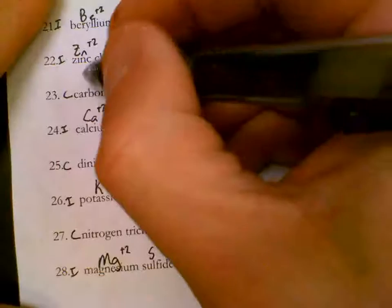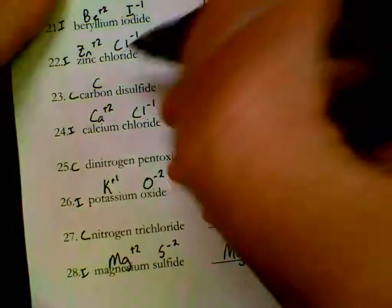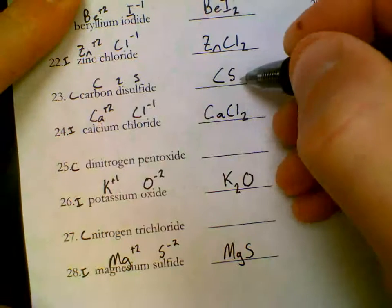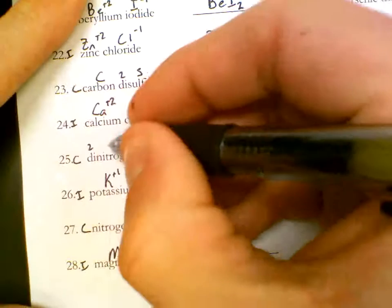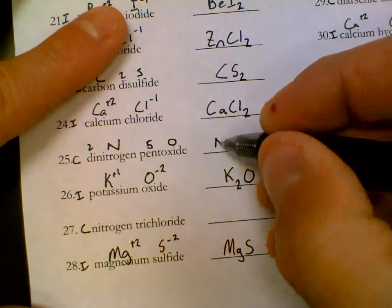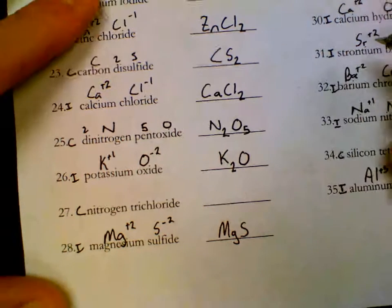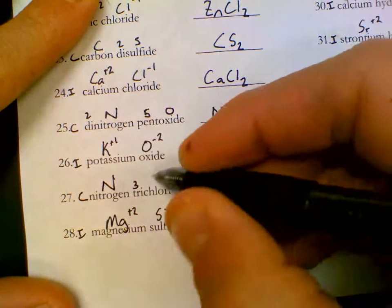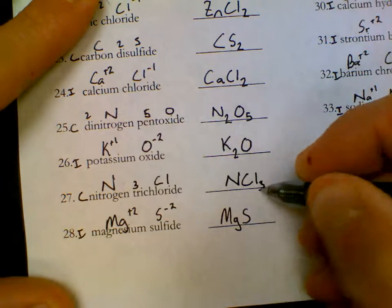For the names, write down the symbols. Carbon, no prefix, subscript 1. Di, sulfide is S2. C S sub 2. Dinitrogen prefix 2, nitrogen is N. Pent is 5, oxide is O. N sub 2 O sub 5. Nitrogen, tri is 3, chloride Cl. N Cl subscript 3.